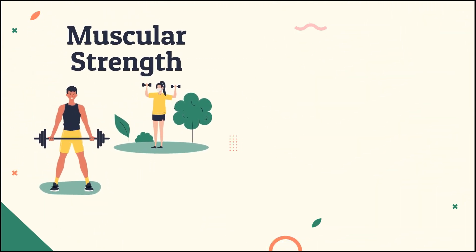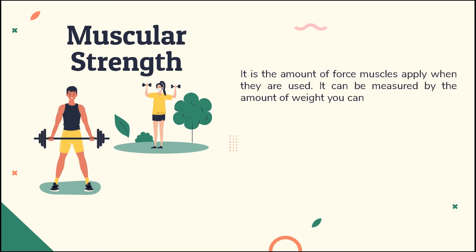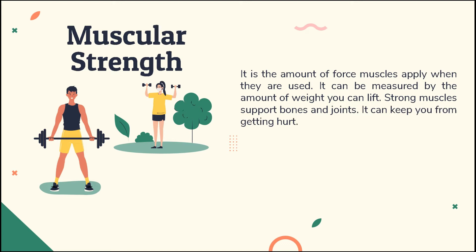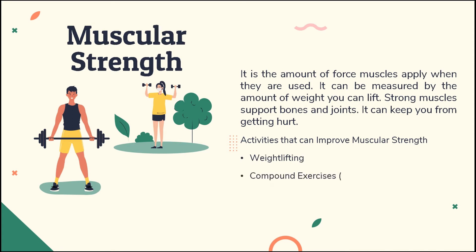Muscular strength is the amount of force muscles apply when they are used. It can be measured by the amount of weight you can lift. Strong muscles support bones and joints and can keep you from getting hurt. Activities that can improve muscular strength are weight lifting, compound exercises like multi-joint movements such as squats, and more weights with less reps.